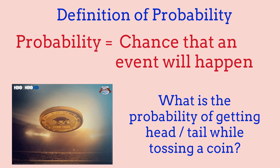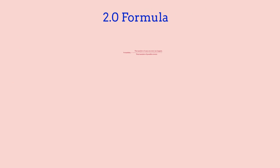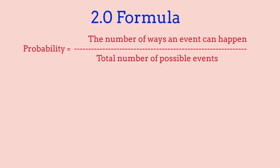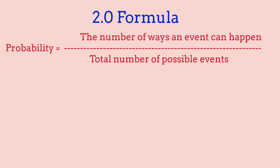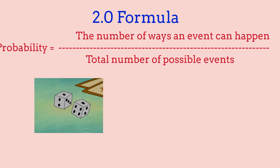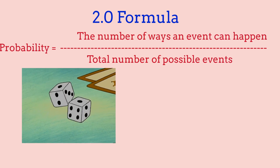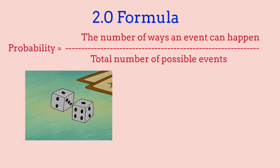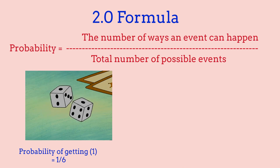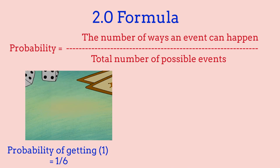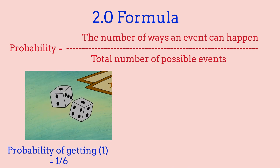Now let's look at the formula for probability. Basically, the formula for probability is the number of ways a result can happen divided by the number of possible outcomes. For example, if we have a dice, there are six different possible outcomes — we could roll a 1, 2, 3, 4, 5, or 6. If we're trying to roll a 1, the number of ways that result can happen is 1, and the possible outcomes is 6, so the probability of getting a 1 on a dice is 1 over 6.